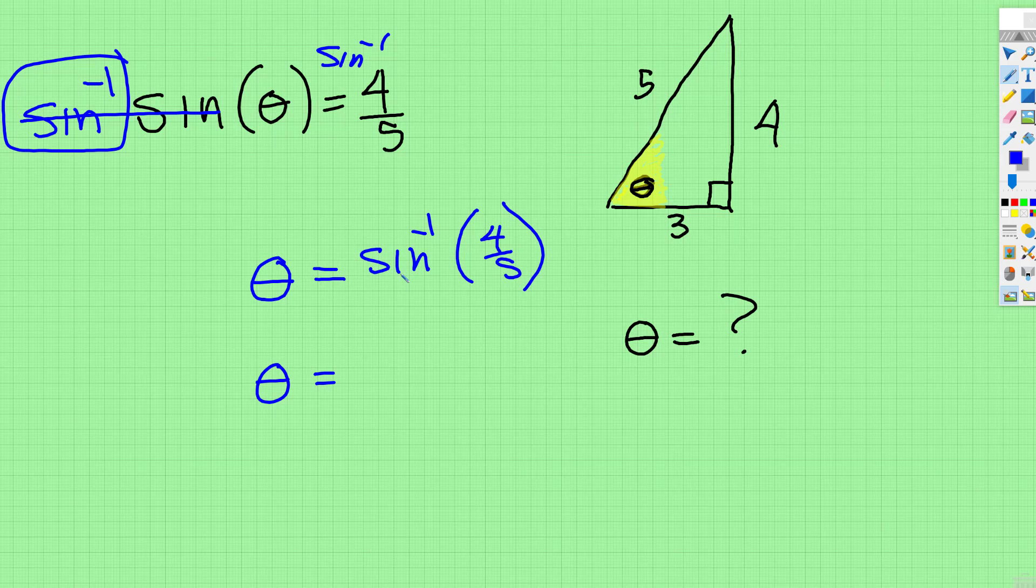and then select the sine, and then select 4, divide 5, close parentheses, enter, and what you get, it's going to be rounded. That's about 53, I'll round to the nearest tenth, 53.1 degree angle.